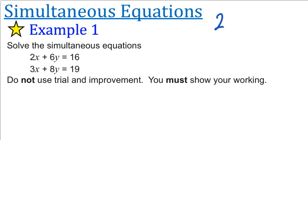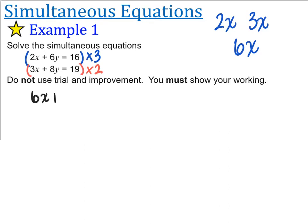So 2x and 3x, they both have 6x in common. So what I'm going to do is I'm going to take the whole first equation and multiply it by 3, and then I'm going to take the entire second equation and multiply that by 2. So I'm going to do that and rewrite those equations down. So I end up with 6x plus 18y is equal to 48, and I also have 6x plus 16y is equal to 38.